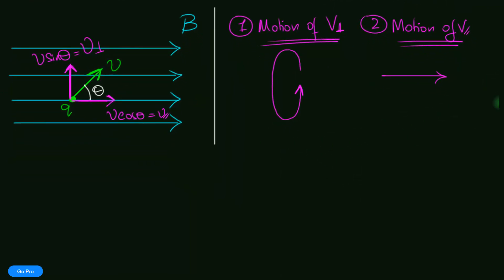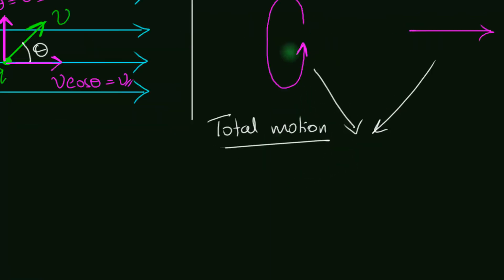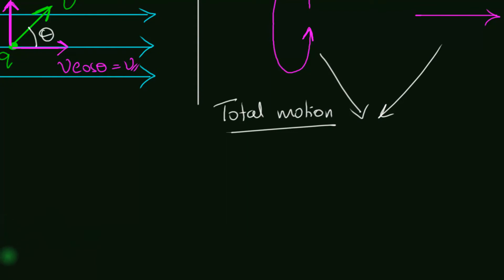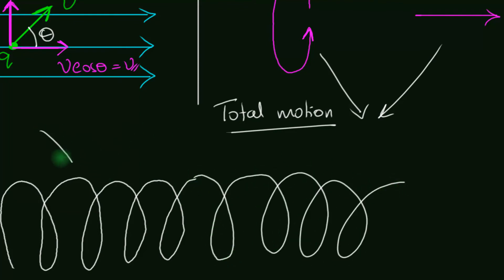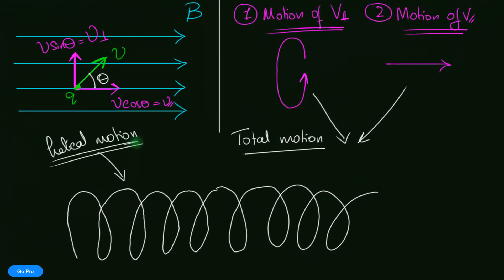One motion is circular, in a plane perpendicular to the magnetic field. The second motion is straight, parallel to the magnetic field. But remember, these are not two charged particles — they are one single particle, so we need to combine the two motions. Imagine a charged particle going in a circle and at the same time going forward. That composite motion is going to be a helical motion — spiraling forward.